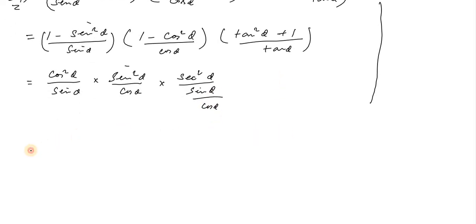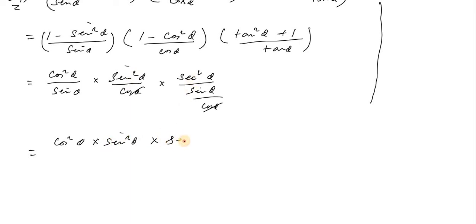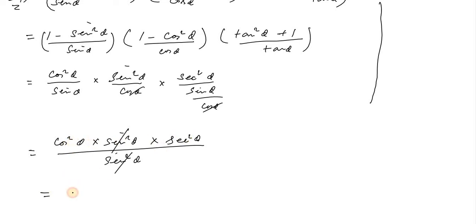Continuing: cos theta equals sin theta equals sin squared theta into sin squared theta, divided by sin theta into sin theta into sin squared theta. That is, sin squared theta cancels on cos squared theta into sec squared theta.